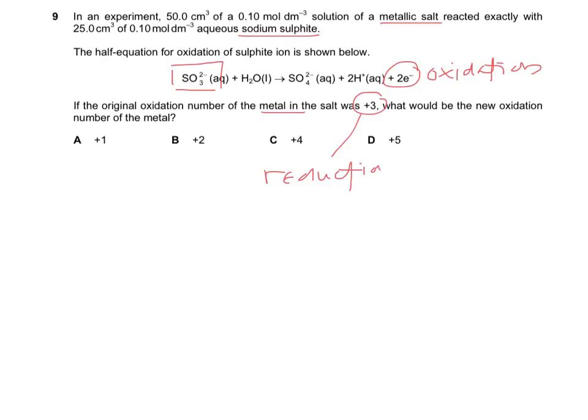So for M³⁺ to undergo reduction, it's impossible to have answer C, which is +4, and also answer D, which is +5.